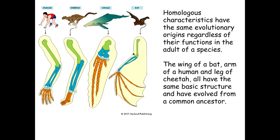Here you can see the wing of the bat, the fin of the whale, the leg of the cheetah, and the arm of a human. Because they all developed from the same evolutionary origin, they have a similar structure. You can see that there's a common green bone which then goes into the blue ones and so on — we all have those similar bone structures because of the same evolutionary origins.